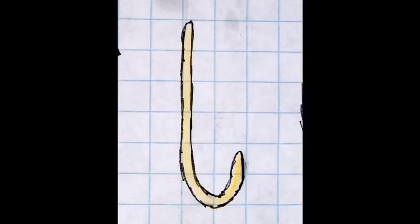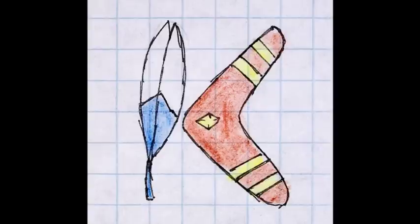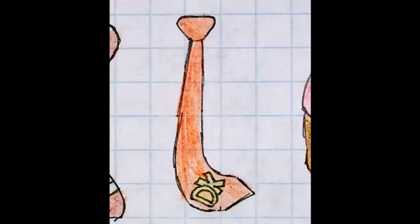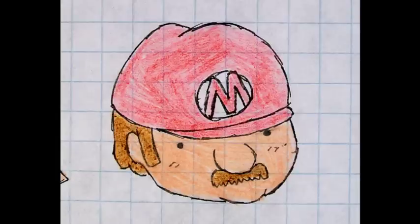K is the rock's feather and the boomerang, again from Zelda. L is Donkey Kong's tie. M is a Mario, and I'm very proud of that drawing for some reason.